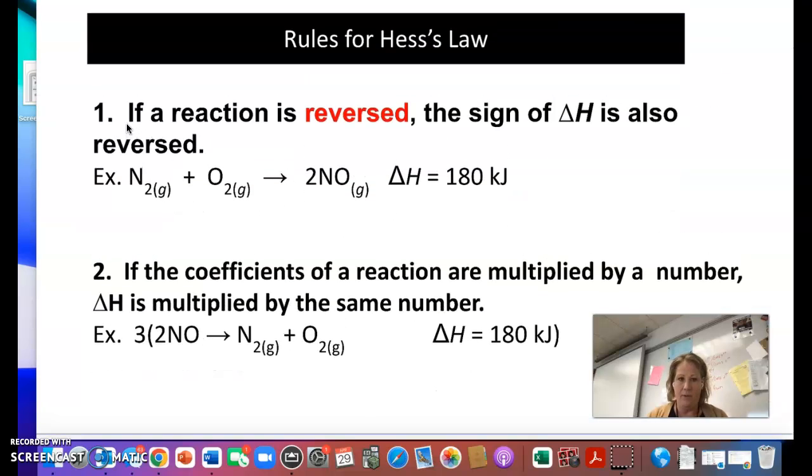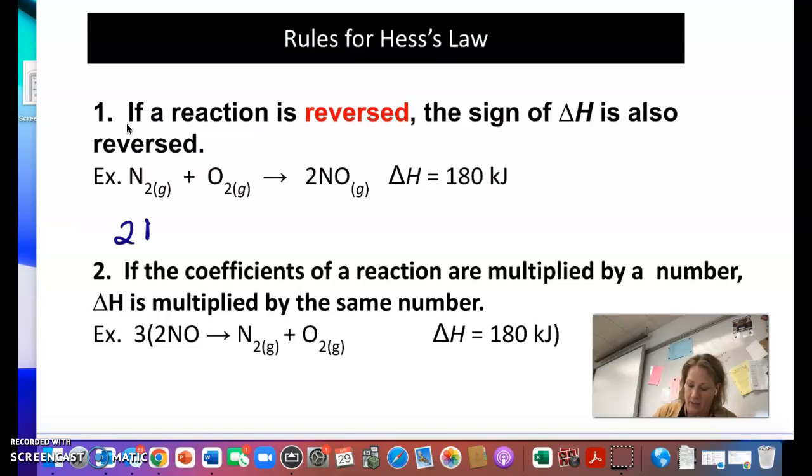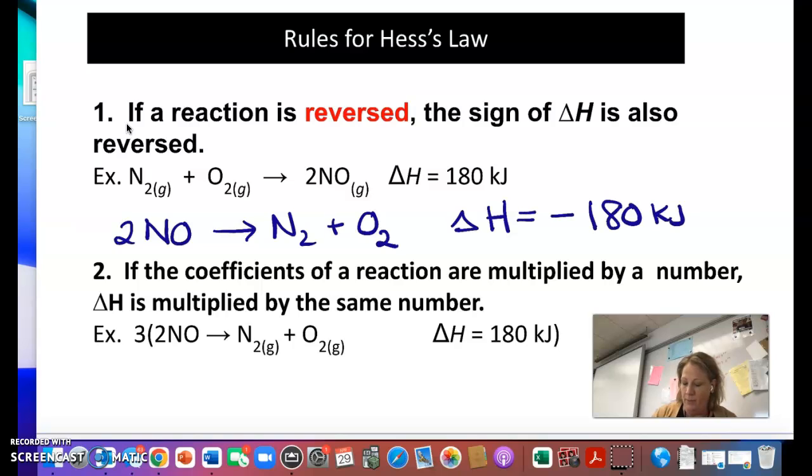So these are the rules that we're going to use for Hess's Law. Sometimes we'll reverse chemical reactions. If we do reverse it, like for this first reaction, let's say I decide now that the NO is my reactant and the N2 and the O2 are my products, then my delta H is going to change the sign. So it was positive, so it becomes negative. If it had become negative, then if it started negative, it would have become positive.